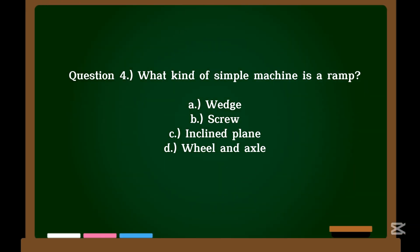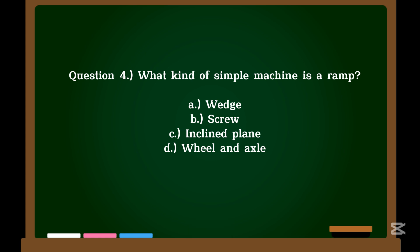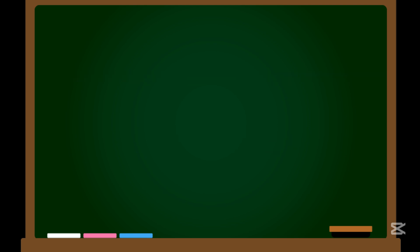Question 4. What kind of simple machine is a ramp? A. Wedge. B. Screw. C. Inclined plane. D. Wheel and axle. Correct answer: C. Inclined plane.